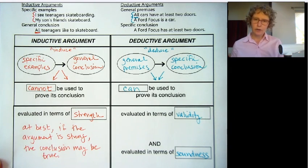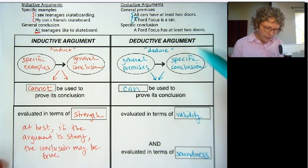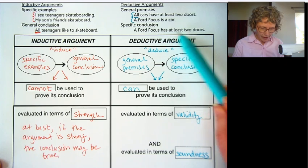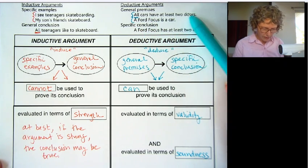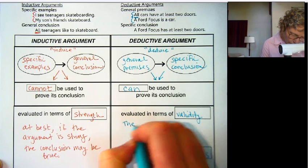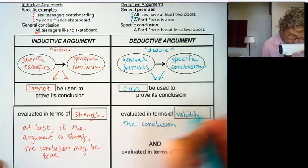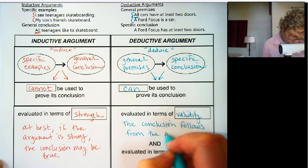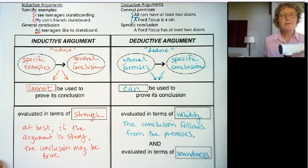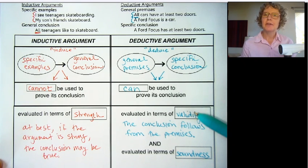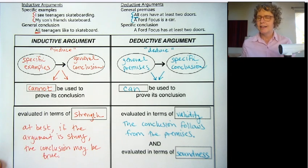Valid means the conclusion follows from its premises. In this case, a Ford Focus having at least two doors follows from the fact that all cars have at least two doors and a Ford Focus is a car — so this is a valid argument. However, someone might make an argument with false premises. You might have false premises and then something that follows from those premises — it's a valid argument, but not a sound argument.